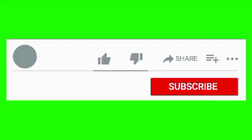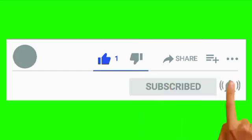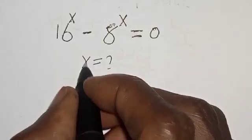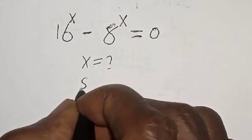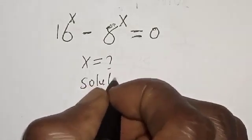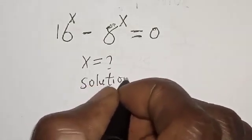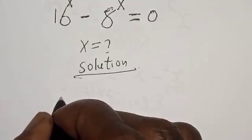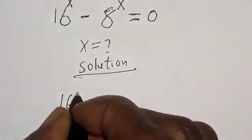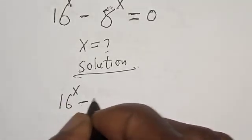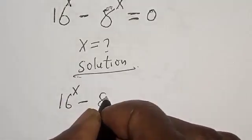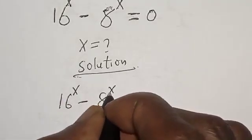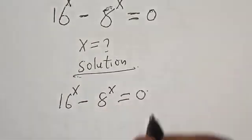But before we proceed, please don't forget to like, share, comment and subscribe. Thank you. Solution. We have the given equation: 16 raised to power x minus 8 raised to power x is equal to 0.